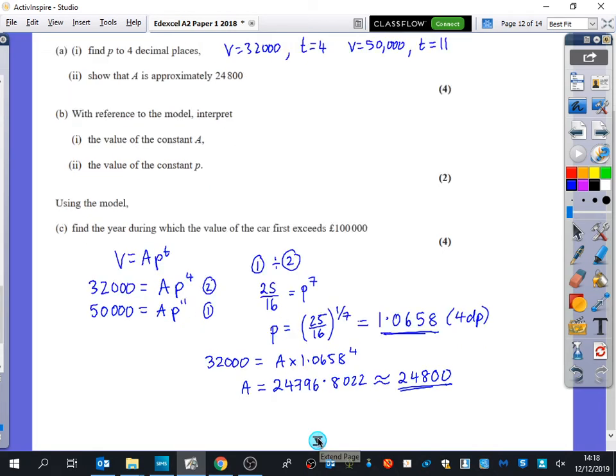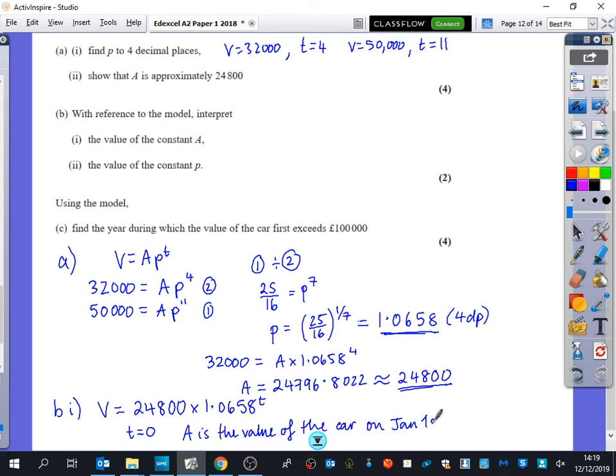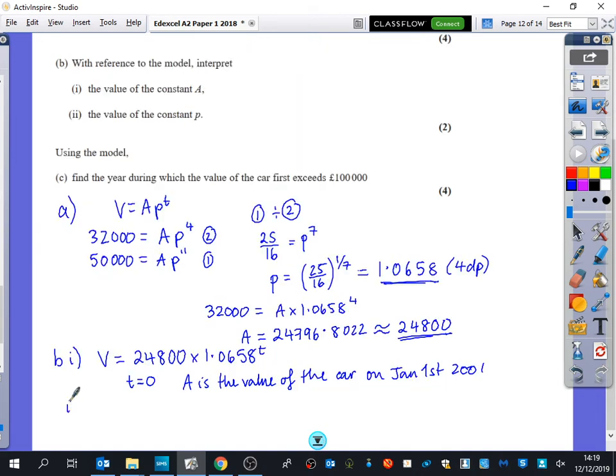Then part B, it says with reference to the model, interpret the value of the constant A. So we've now got that V equals 24,800 times by 1.0658 to the power of T. Well, when T is equal to zero, this is just 24,800. So A is the value of the car on January the 1st 2001. It's the value of the car at the beginning of the whole thing.